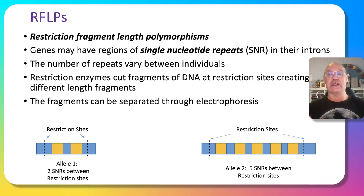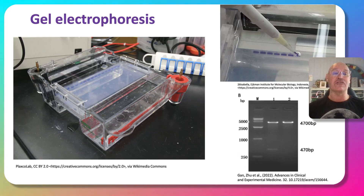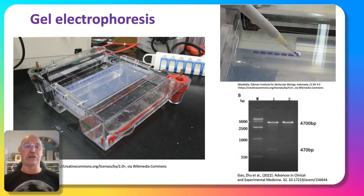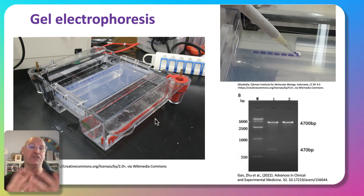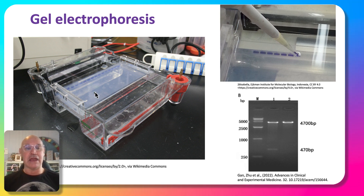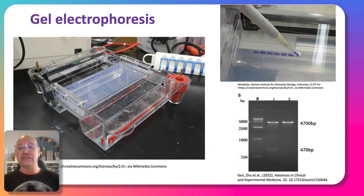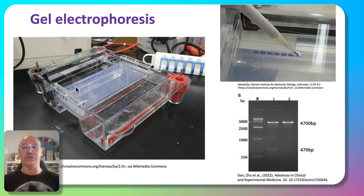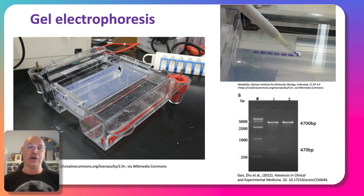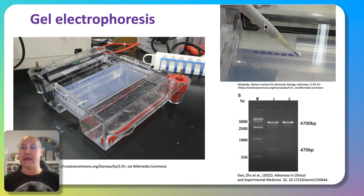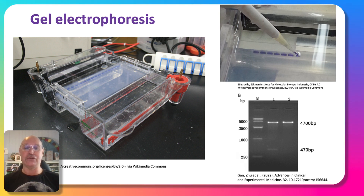We can put those fragments through gel electrophoresis, which separates them based on size. The machine uses an agarose gel, and at one end there are wells where we use a micropipette to insert the DNA in solution. One end is the negative terminal, and the other is the positive terminal, with the wells on the negative side.